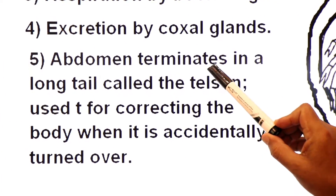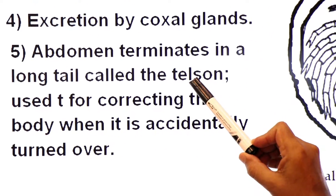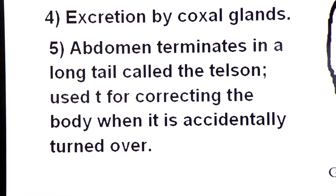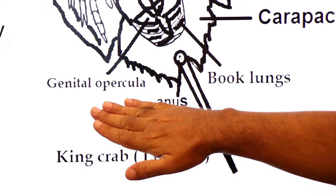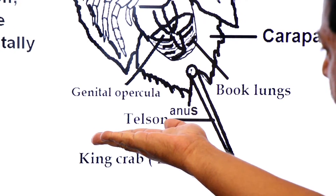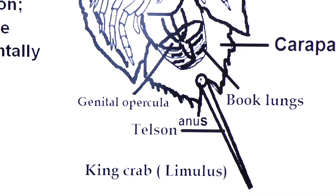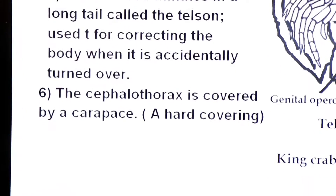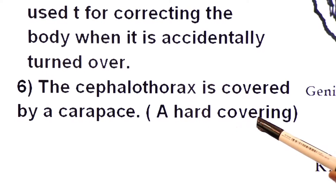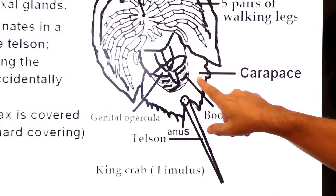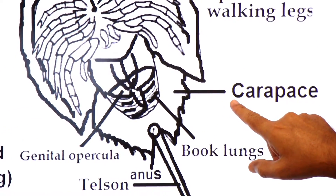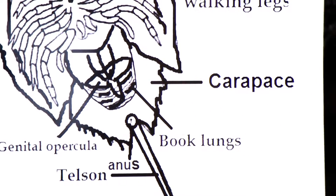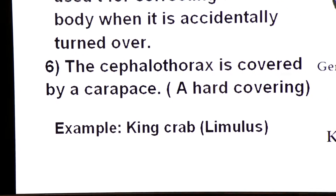The abdomen terminates in a long tail called the telson, used to correct the body when it is accidentally turned over. The cephalothorax is covered by the carapace — a hard, calcified covering, due to the deposition of calcium salts. This is their exoskeleton. The example of this class is the king crab, Limulus.